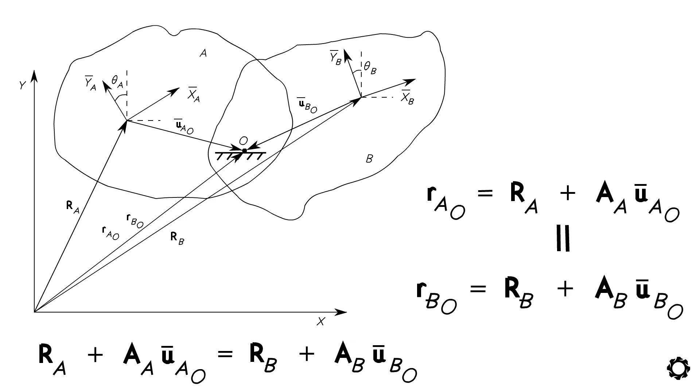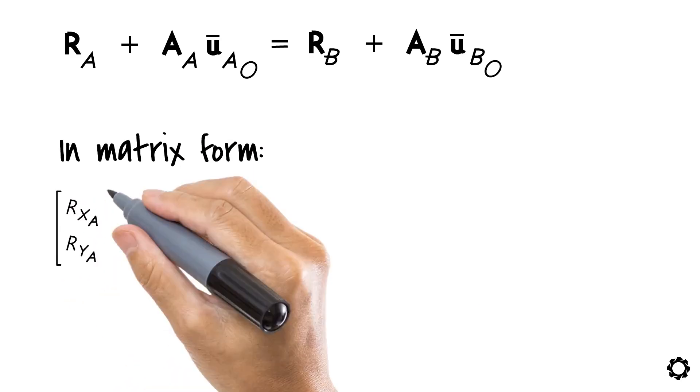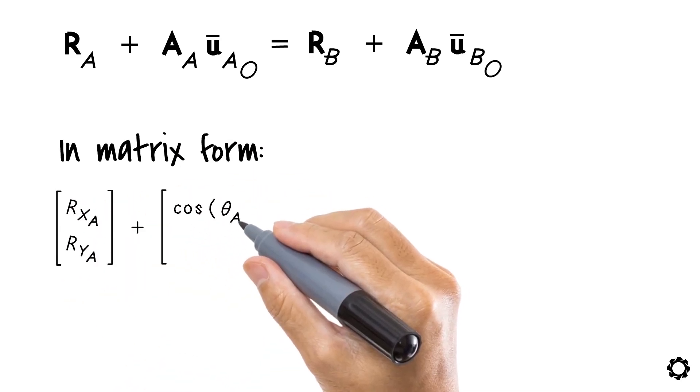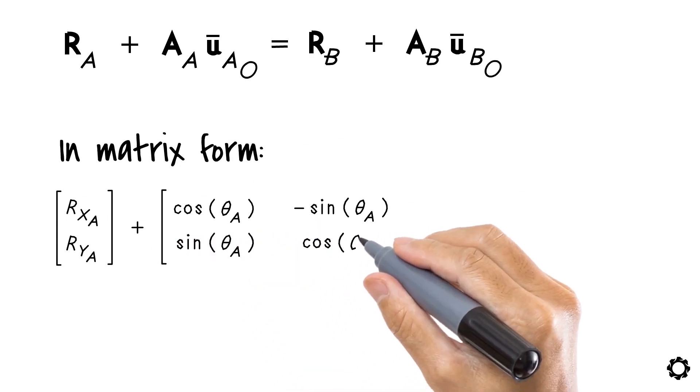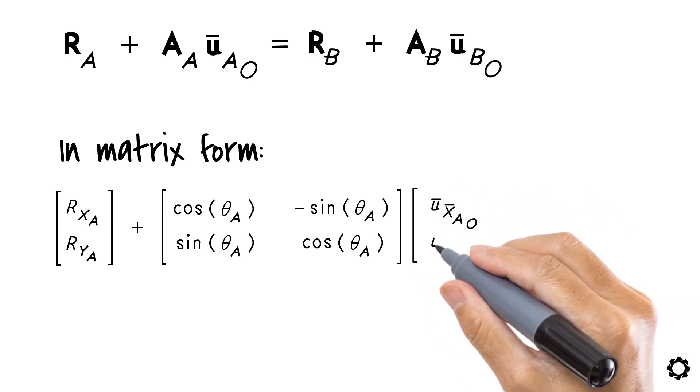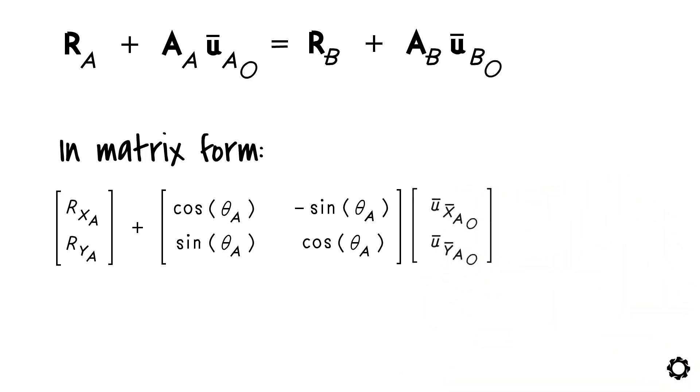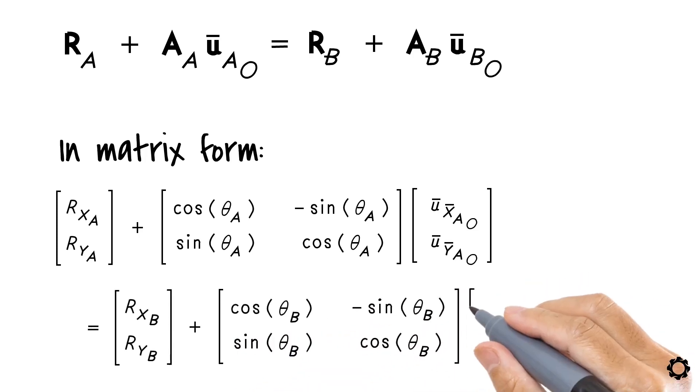This doesn't say much. Let's write this equality in matrix form. RXA RYA plus cos theta A minus sin theta A sin theta A cos theta A multiplied by U bar XAO U bar YAO equals RXB RYB plus cos theta B minus sin theta B sin theta B cos theta B multiplied by U bar XBO U bar YBO.